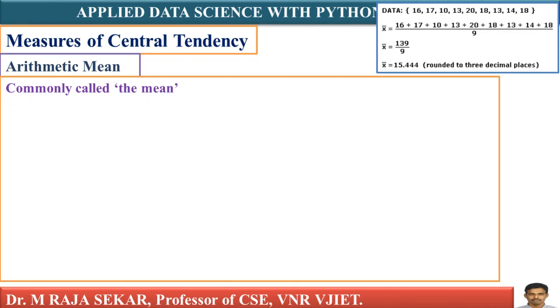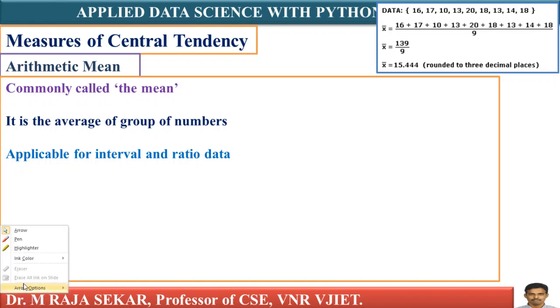Commonly, this arithmetic mean is called as mean. It is the average of a group of numbers, applicable for interval and ratio data.